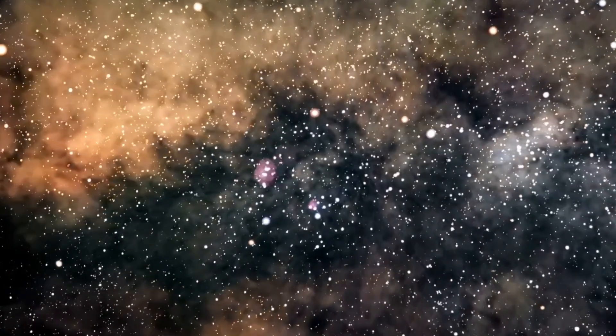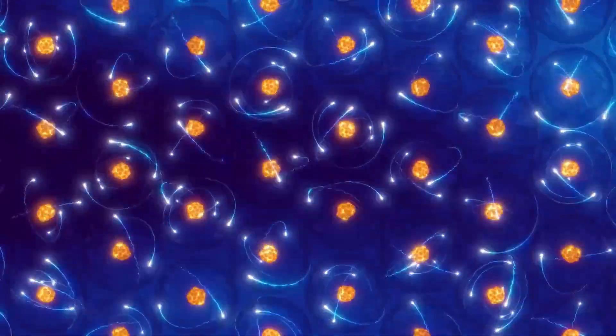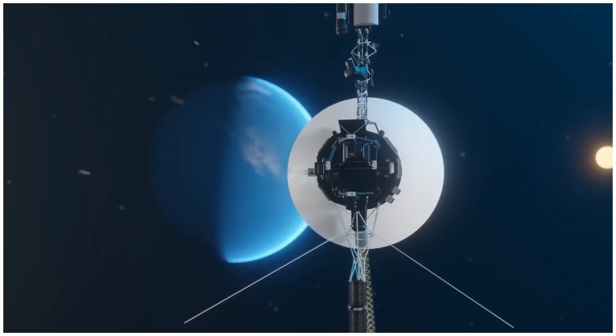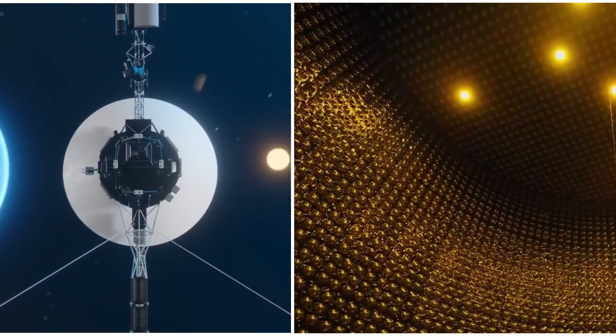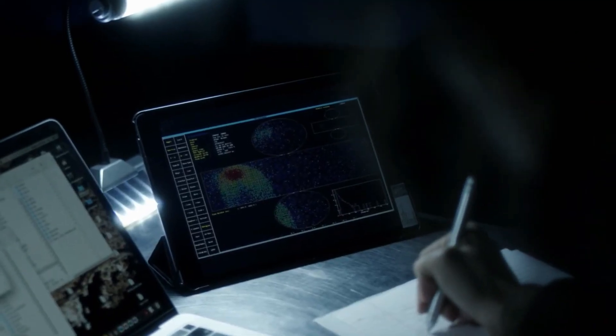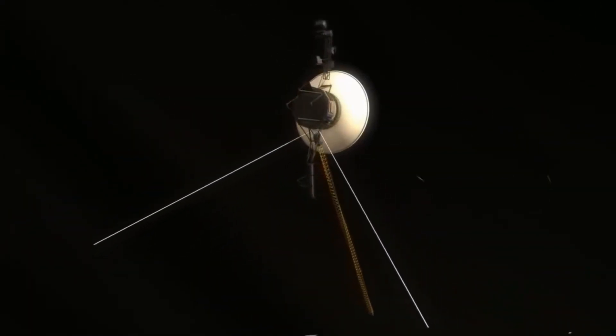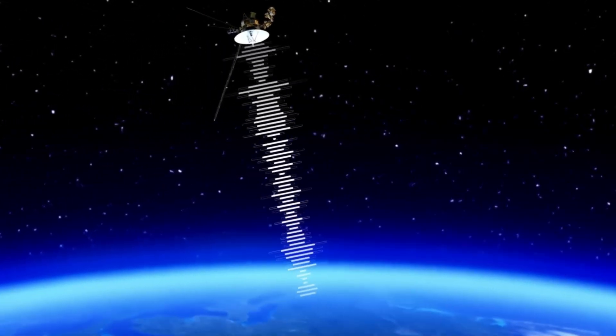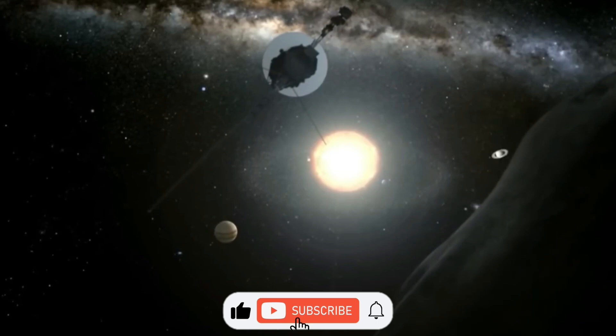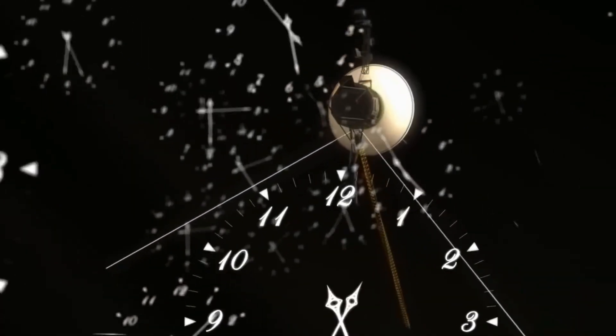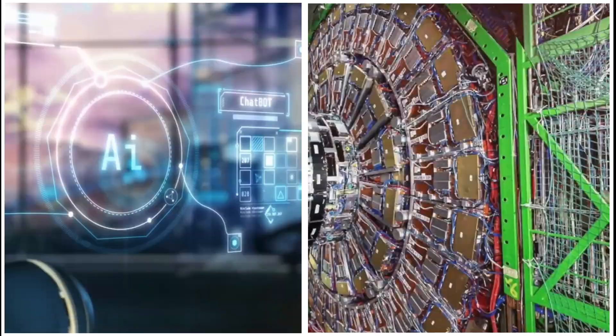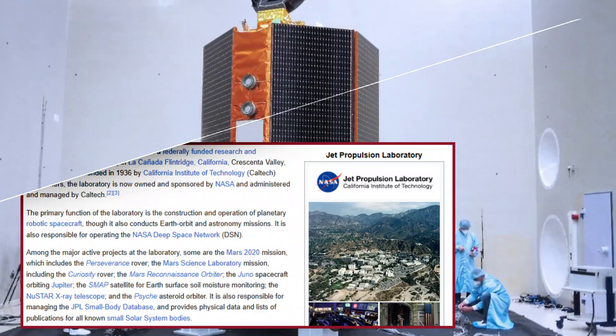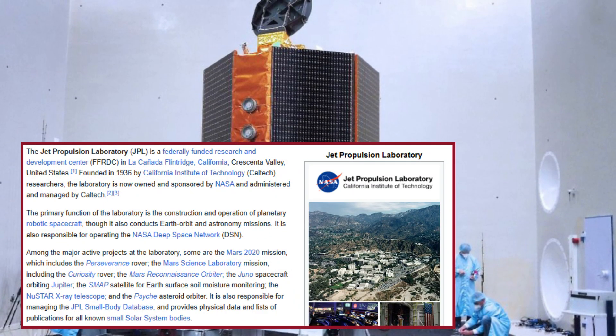For nearly five decades, Voyager 1 has pushed the boundaries of what humanity can explore. It has crossed into the unknown, sending back data that has reshaped our understanding of space. Now in what may be its final message, it has given us one last enigma. Is this the first sign of new physics? A breakthrough in astrophysics? Or something beyond our understanding? One thing is certain: the universe just became even stranger. Do you think this signal is just a cosmic coincidence or something more? Comment your thoughts below. And if you don't want to miss our next big discovery, hit subscribe and turn on notifications.